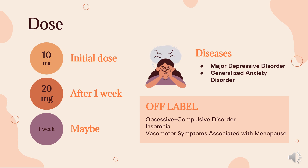Off-label uses. Insomnia secondary to depression: 5–20 mg PO over an 8-week period. Insomnia secondary to panic disorder: 5–10 mg PO over an 8-week period. Vasomotor symptoms associated with menopause (off-label): 10 mg PO once daily, may increase to 20 mg PO once daily after 4 weeks if symptoms are not adequately controlled.